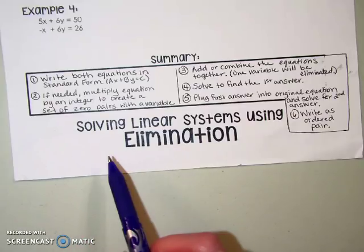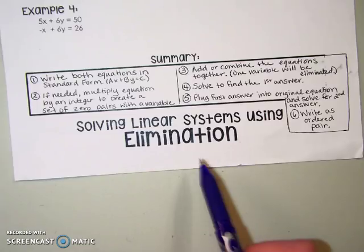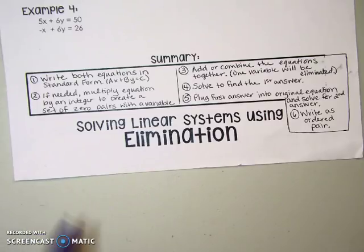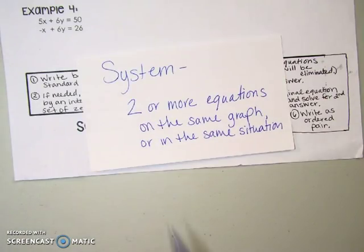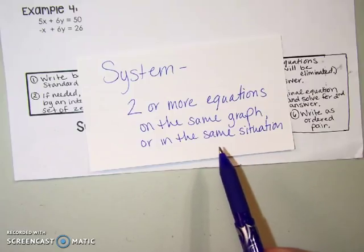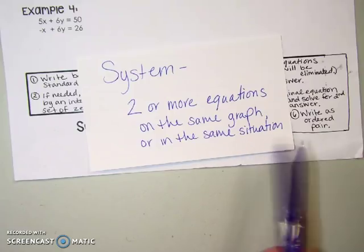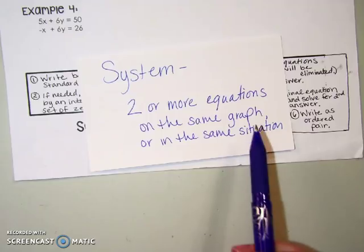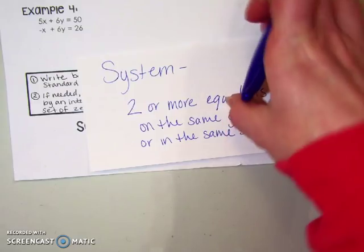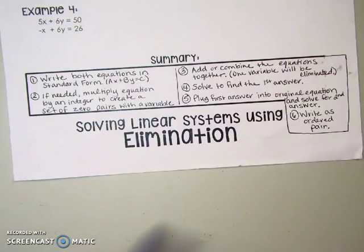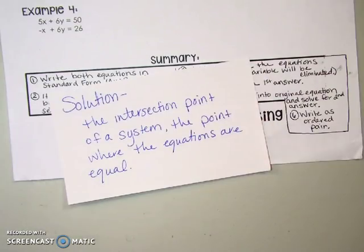Today we're talking about how to solve linear systems using elimination. Prior to this, we talked about how a system is two or more equations on the same graph or in the same situation. We don't always graph them, so if we're not graphing them, there are two or more equations that are in the same situation. The solution to a system is the intersection point, or the point where the equations are equal.